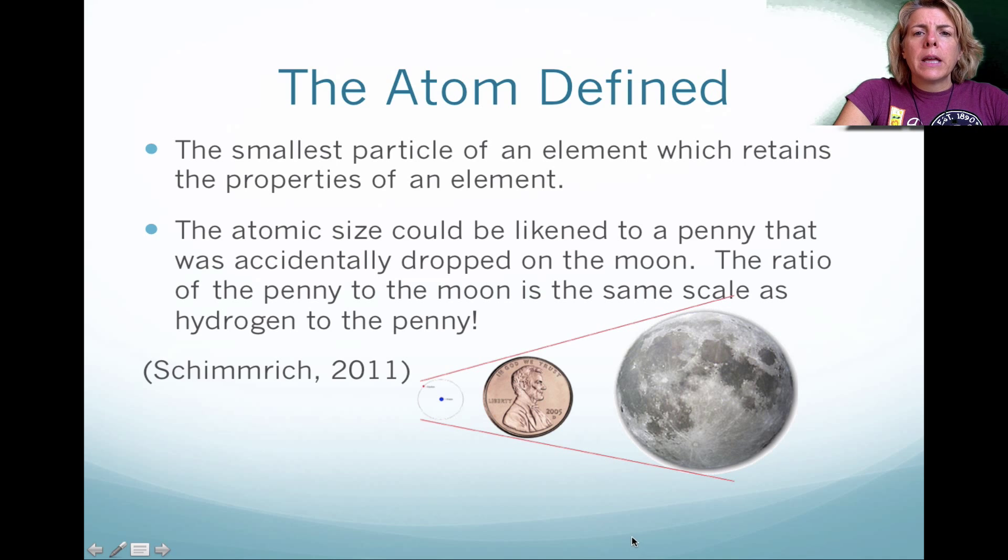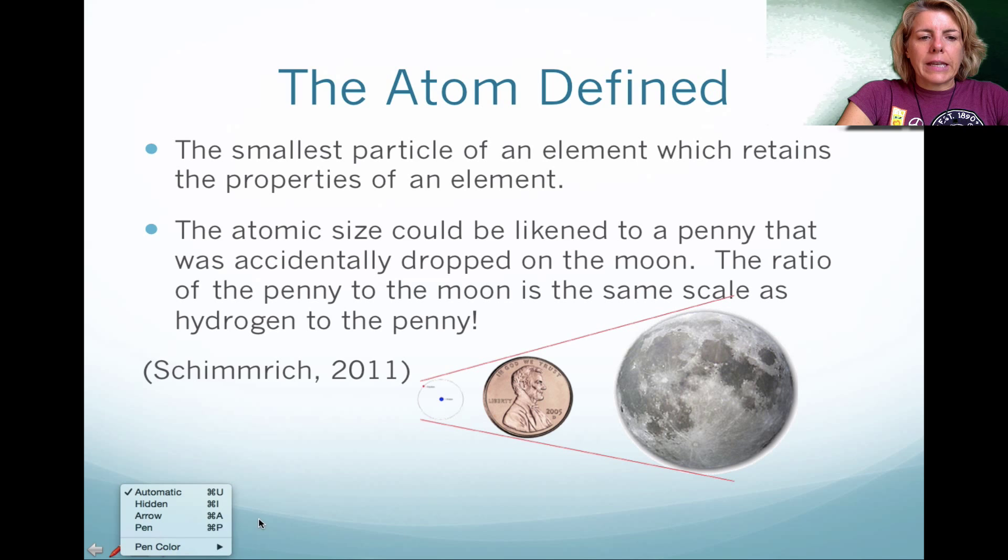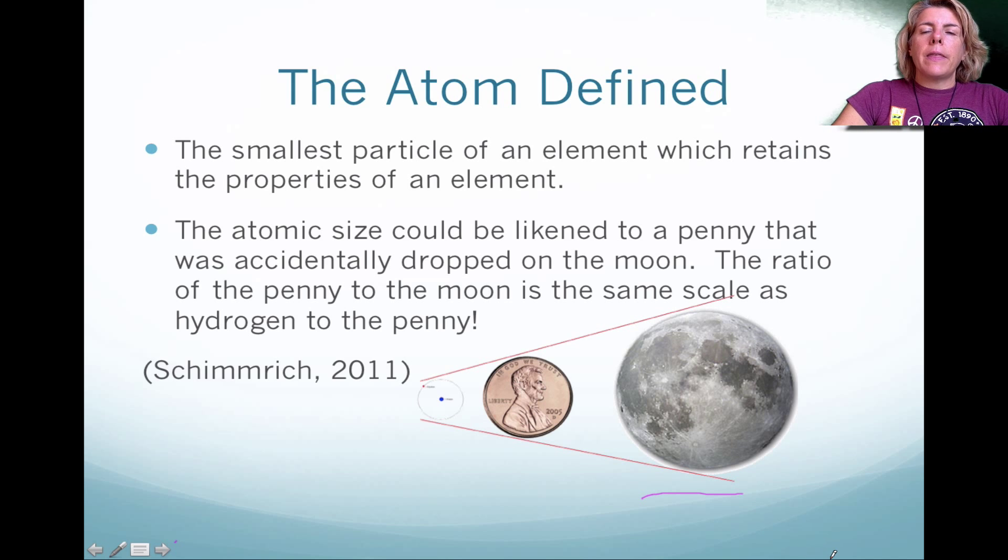Lastly, we want to talk about the atom. The atom is the smallest particle of an element, and in that element, it retains its properties. This is the really tough part where you have to wrap your head around the size of the atom. Here I have the moon and a penny. Say, for instance, you're on the moon and you accidentally drop a penny. Obviously, the moon is massive - it's huge compared to that penny. If we took this penny and equated it to the size of the moon, a little tiny atom of hydrogen would be in the same ratio as that penny to the moon. This little tiny atom would occupy a very, very tiny space within this penny because of its size.